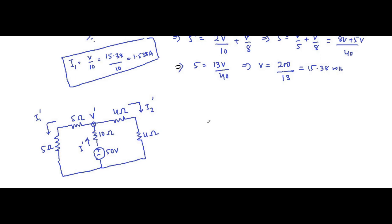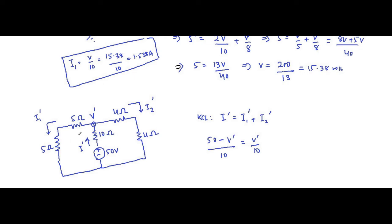The KCL equation at this node is: I dash divides into I1 dash plus I2 dash. Writing in terms of voltage and resistances: I2 dash equals (50 minus V dash) by 10. I1 dash equals V dash by 10, since the two 5 ohm resistors in series add to 10. I2 dash equals V dash by (4 plus 4), which is V dash by 8.